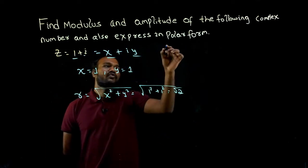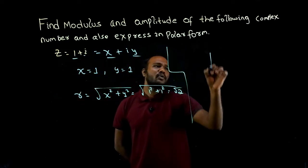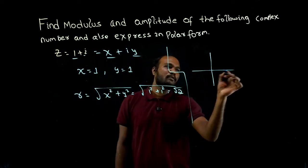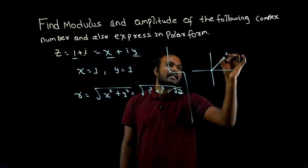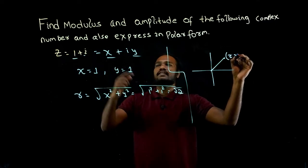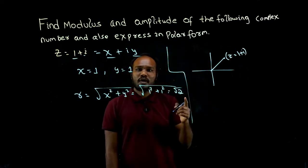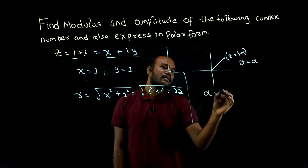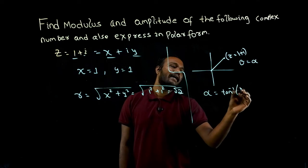Next, to find amplitude, we have to know which quadrant. x positive, y positive is in the first quadrant. The given number is 1 plus i. In the first quadrant, theta is nothing but alpha.